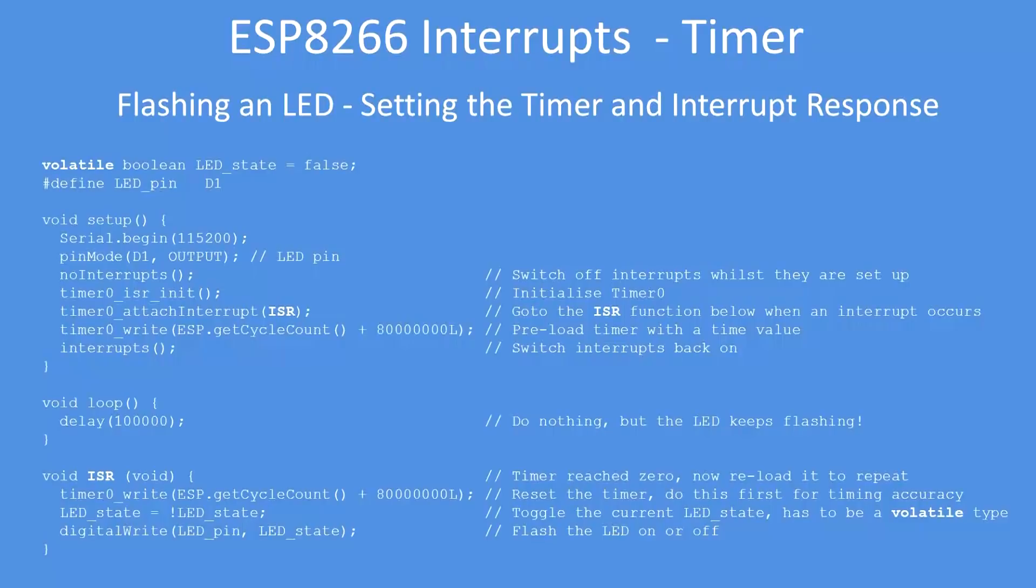Note that in the main loop there's a very long delay, so regardless of that long delay, the LED keeps flashing as the timer interrupt is triggered every second, toggles the state of the LED pin, resets the interrupt, and waits for the next second timeout. So it's a very powerful way of doing two tasks at once.